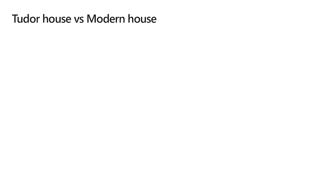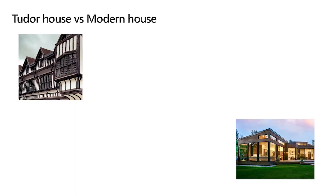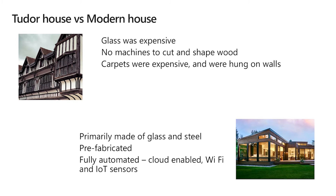To illustrate the difference between old and new, I'll use Tudor homes — popular in England in the 1500s and 1600s — versus a modern house. They solve the same purpose: someone can live there. But they were built on very different bases. In Tudor days, glass was extremely expensive, so windows were tiny; modern buildings like the Gherkin in London are almost entirely glass. In the olden days, there was no machine to cut wood, so houses had strange shapes. Nowadays it's all prefabricated — you just fix things together like Legos.